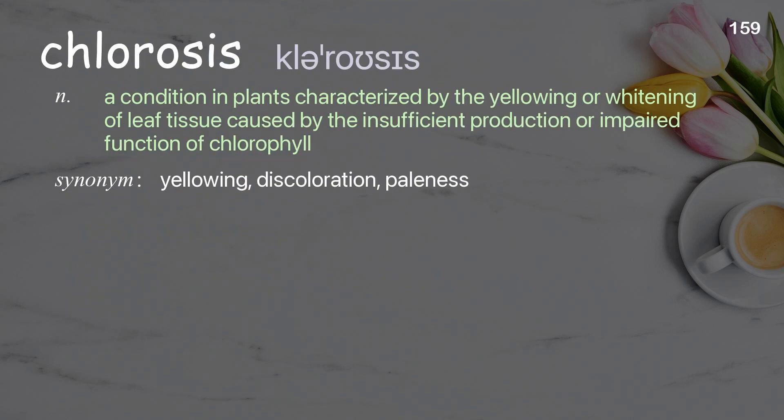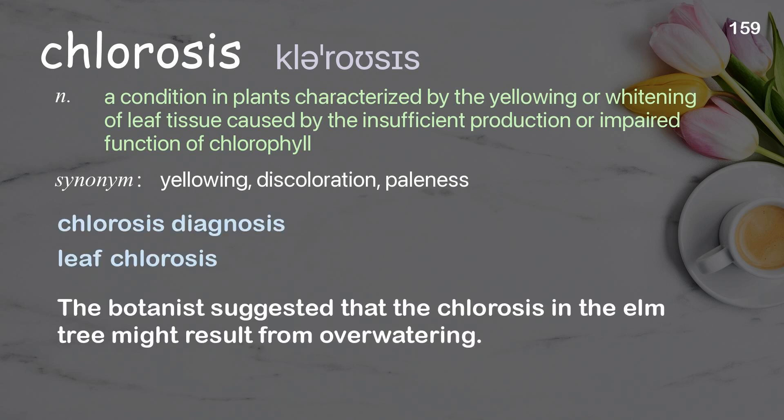Chlorosis: a condition in plants characterized by the yellowing or whitening of leaf tissue caused by the insufficient production or impaired function of chlorophyll. Examples: chlorosis diagnosis, leaf chlorosis. The botanist suggested that the chlorosis in the elm tree might result from overwatering.